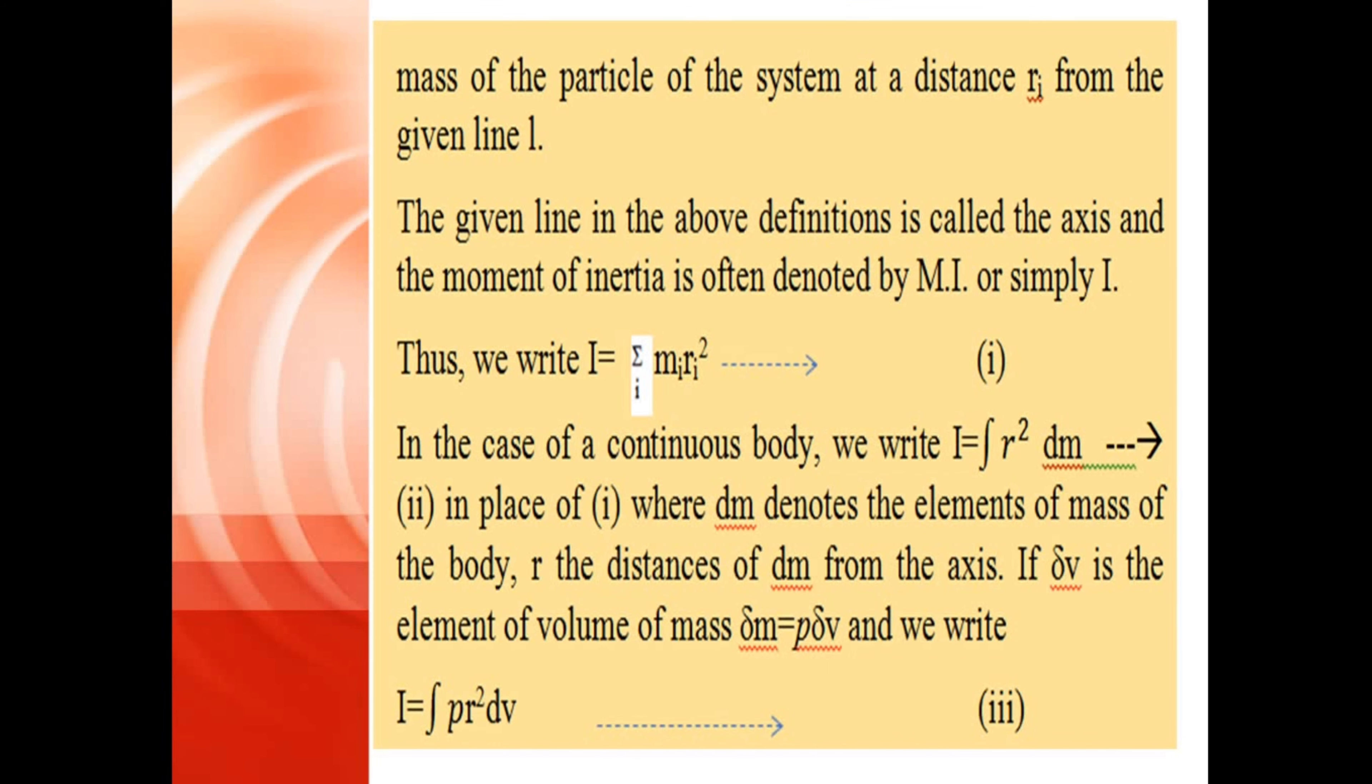The given line in the above definition is called the axis, and the moment of inertia is often denoted by MI or simply I. Thus, we write I = Σmᵢrᵢ², equation (i).